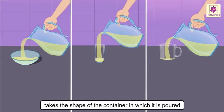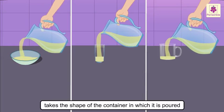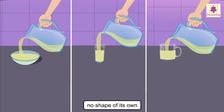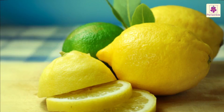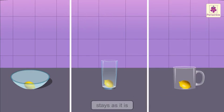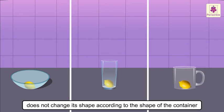Lemonade takes the shape of the container in which it is poured — it has no shape of its own. Lemonade is made from lemon. Now when you put lemon into any container, you cannot pour it. The lemon stays as it is in the container; it does not change its shape according to the shape of the container.